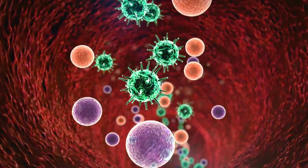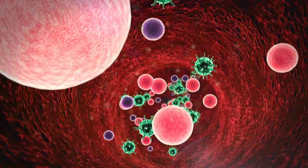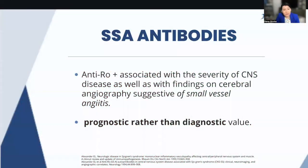These SSA antibodies have actually been associated with a more aggressive disease of the brain. It means that if you have SSA antibodies with neurological involvement, that could indicate a more aggressive disease towards your brain or your spine.